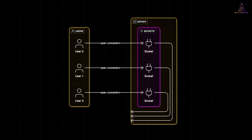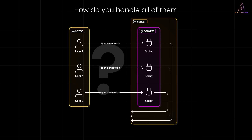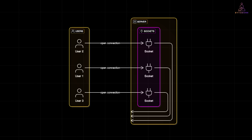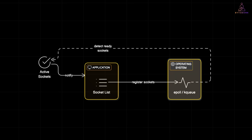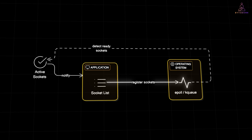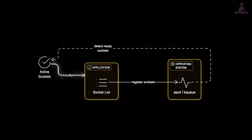Now imagine this: your server is running and thousands of users are connected at the same time — that's thousands of open sockets. But how do you handle all of them without your CPU melting down? If you naively check each socket — socket one got data? No. Socket two? Nothing. Socket three? — that wastes time. You are polling sockets that aren't even doing anything. This is where ePoll on Linux and KQueue on macOS or BSD step in, and they are game changers. Instead of manually looping over every socket, they flip the model. You tell the OS: here is a list of my sockets, just tap me when any of them have data. The OS replies: only these sockets are active, go deal with them. No need to check all 10,000 — just focus on the ones that actually need attention.